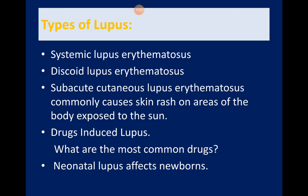Neonatal lupus can occur in newborns of mothers known to have lupus, through passage of certain autoantibodies. Patients with lupus and Sjögren's syndrome can have anti-Ro and anti-La antibodies, which can cause heart blocks in newborns. It is therefore important to classify and identify these antibodies in the mothers, and doctors looking after the newborn should be made aware before delivery so that, for example, a pacemaker for the baby can be prepared in advance.